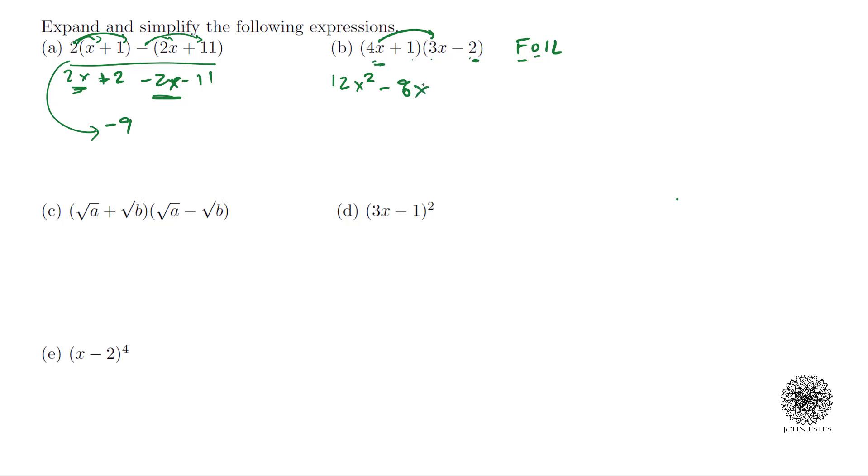The inside terms would just be 1 times 3x which is just 3x, and then last we have 1 and negative 2, giving me negative 2. So when I combine my like terms, the only things I can combine are my x to the first exponent, which we call the linear terms, so I have negative 5x minus 2.